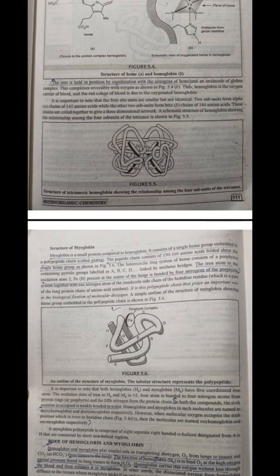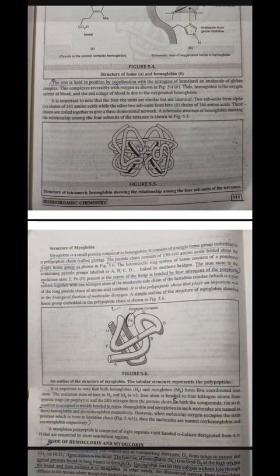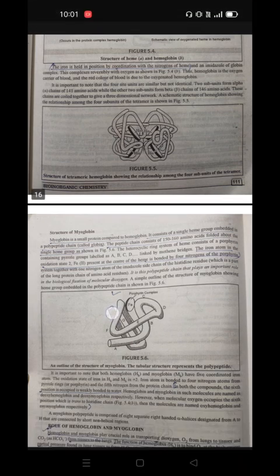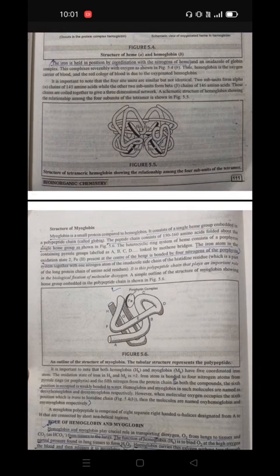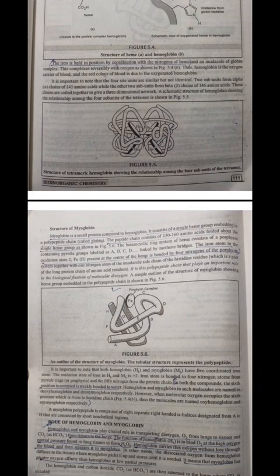However, when molecular oxygen occupies the sixth position which is trans to the histidine chain (figure 5.4b), then the molecules are named oxyhemoglobin and oxymyoglobin respectively. A myoglobin polypeptide is comprised of eight separate right-handed alpha helices designated from A to H that are connected by short non-helical regions.